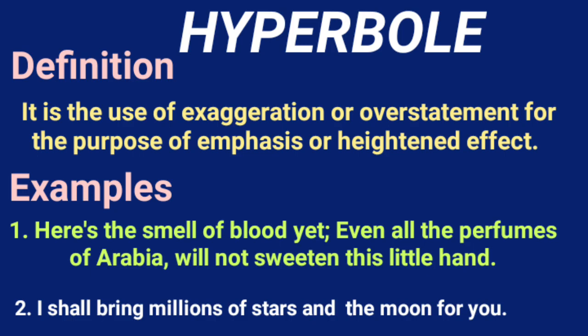The second example of Hyperbole: 'I shall bring millions of stars and the moon for you.' If you are in the game of love, obviously to catch the attention of your lover, you always commit, give promises and talk too much. Here the lover is trying to convince his beloved that he shall bring millions of stars and the moon from the sky. This is nothing but exaggeration, hyperbole — obviously overstatement, highly impossible in practicality, but it is the best example of hyperbole.